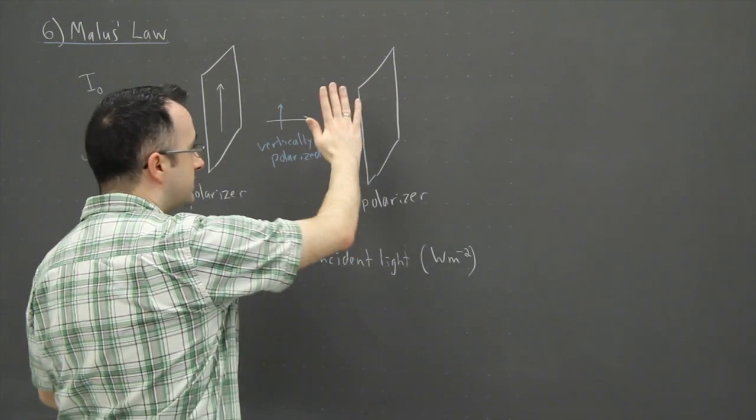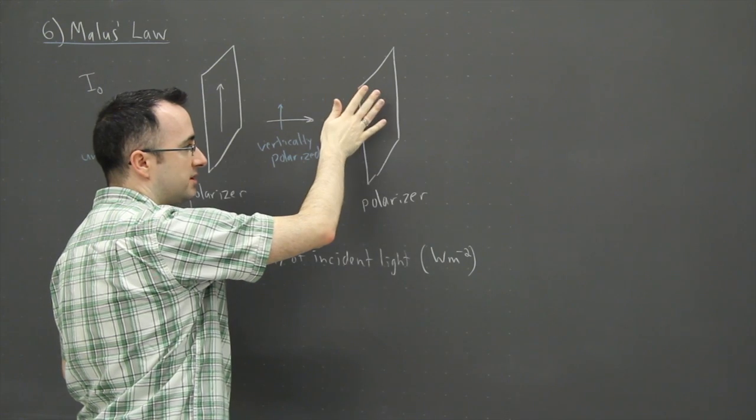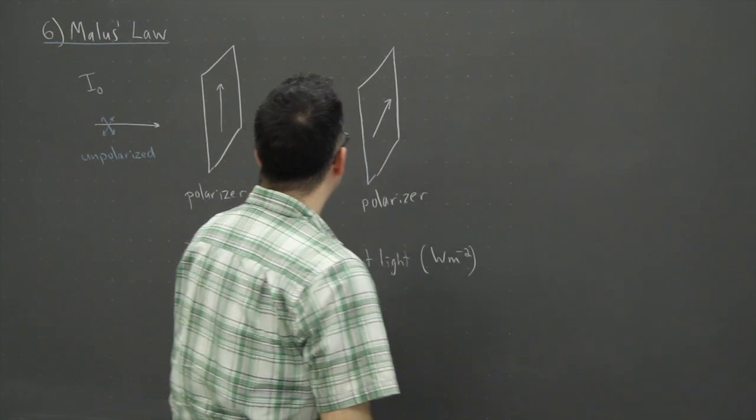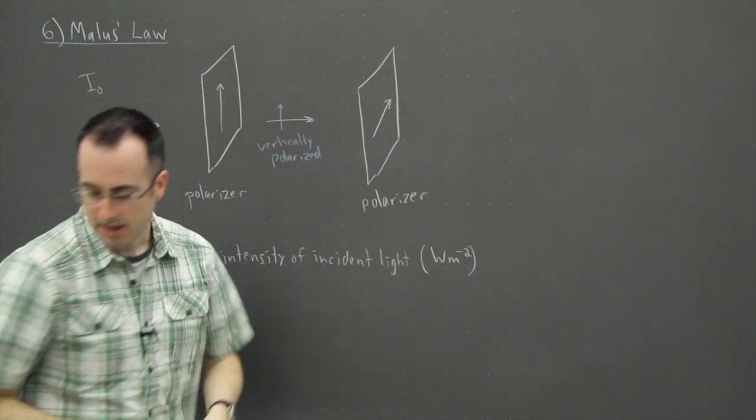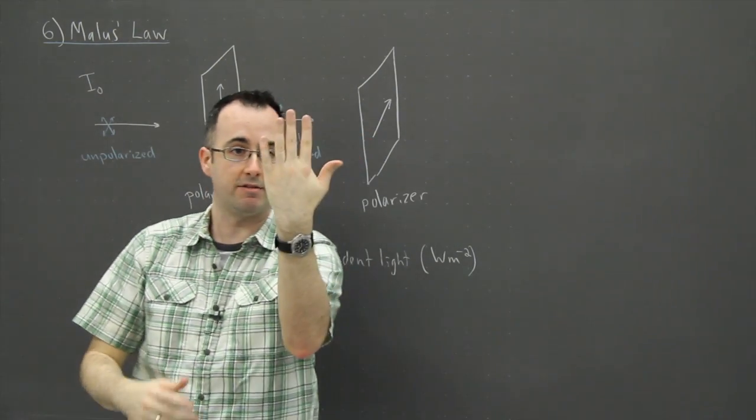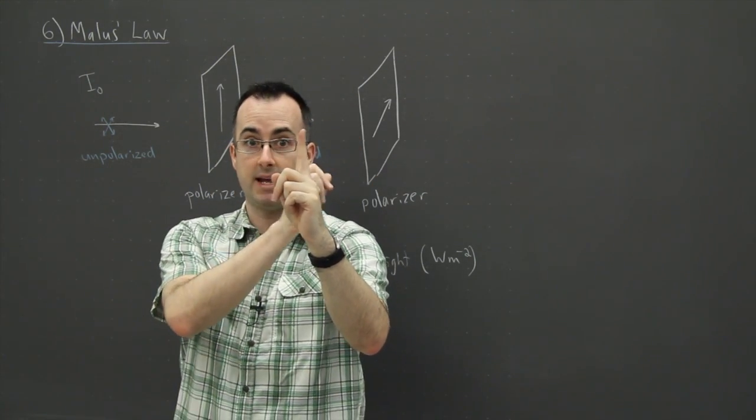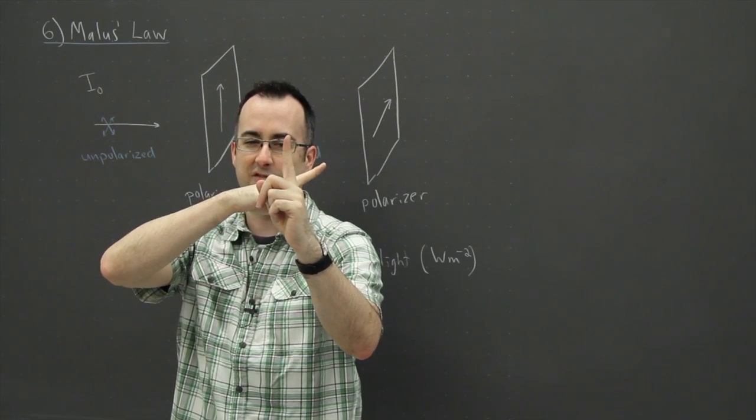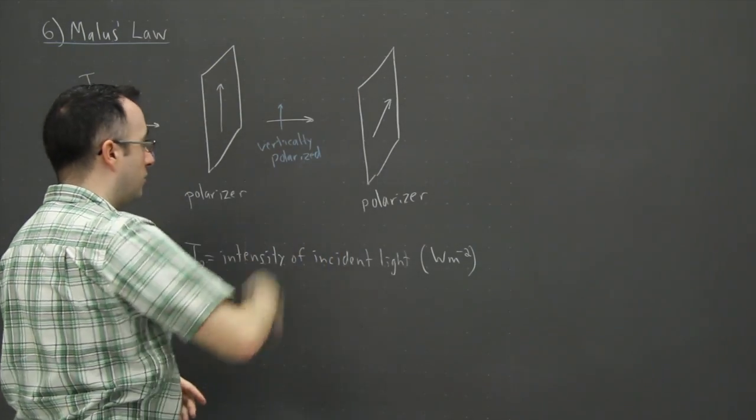Then you have another polarizer, and this one, maybe the angle of how it's polarized is different. So maybe I'll draw it like something like this. It's at a different angle. I'm trying to see in 3D here, but if you're looking at it straight in front of you, maybe the first one is vertically polarized, maybe the second one is like this. It's at a different angle, not parallel, some other angle.